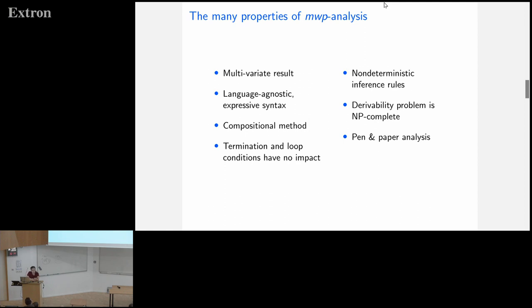The inference rules used to type commands form a non-deterministic system, and the question of whether a program will have a matrix is an NP-complete problem. One more note: this is a purely theoretical analysis — the kind you would do with pen and paper. Most ICC systems are like that.